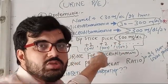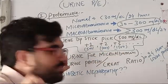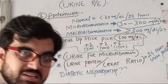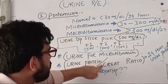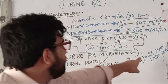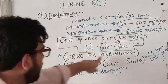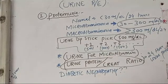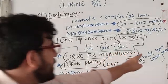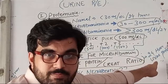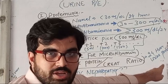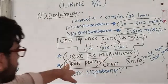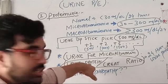For microalbuminuria, you have to send urine for micro albumin. The most accurate and reliable test is the urine protein-to-creatinine ratio (UPCR), which is equivalent to 24-hour urinary protein. Studies have shown that prolonged standing and heavy exertion can cause significant proteinuria, so to avoid those confounders, we use the spot urine protein-to-creatinine ratio.